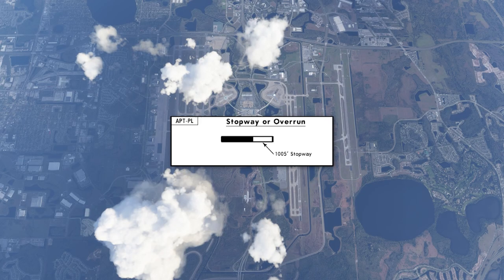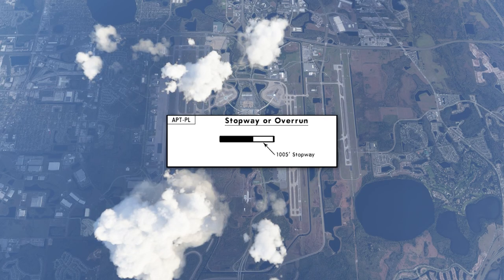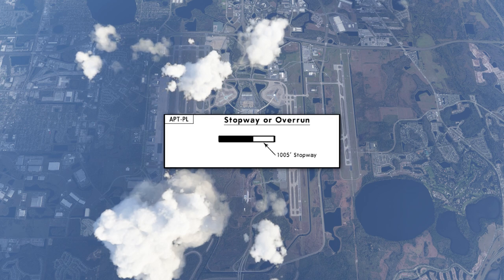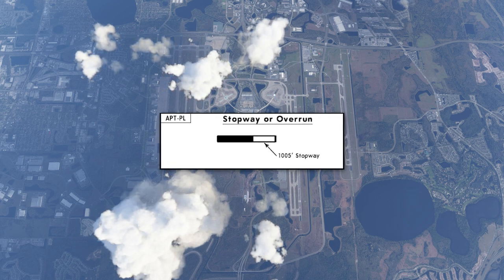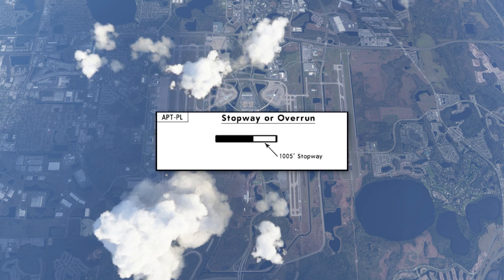Let's talk about a stopway or overrun — they look like this on the chart. When applicable, these stopways and overruns are depicted with their available length. That's not applicable in Orlando — there is no stopway or overrun at this airport.